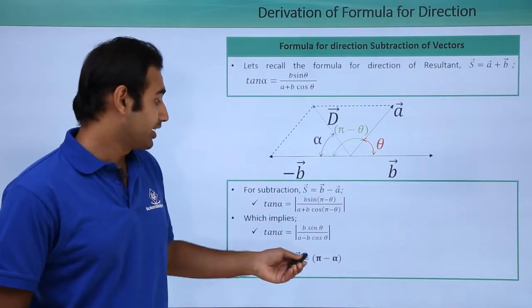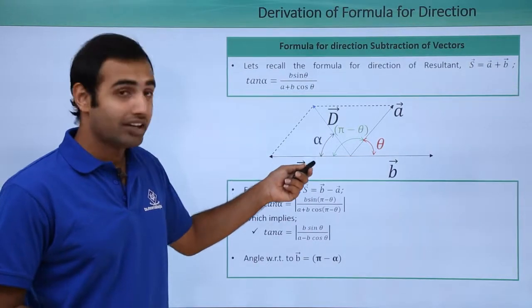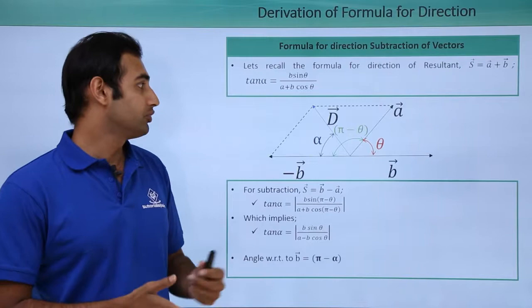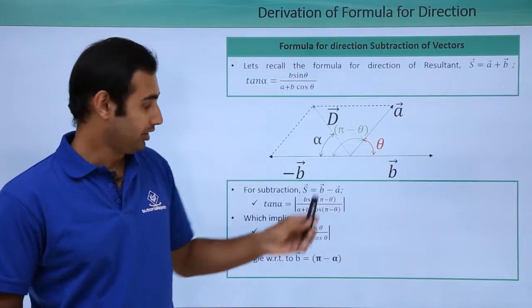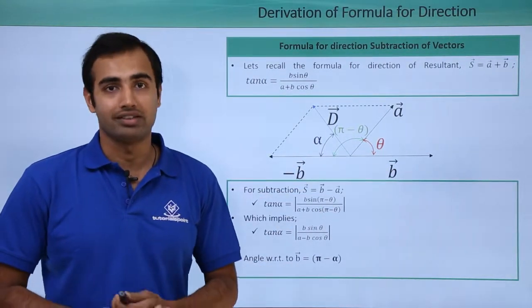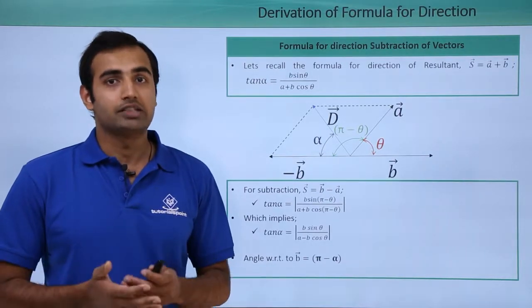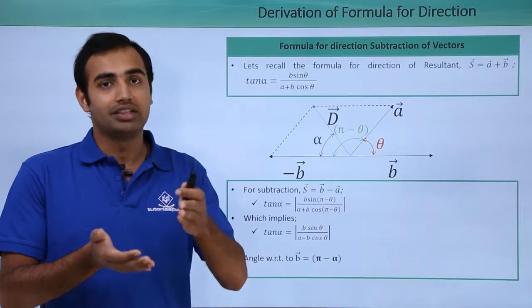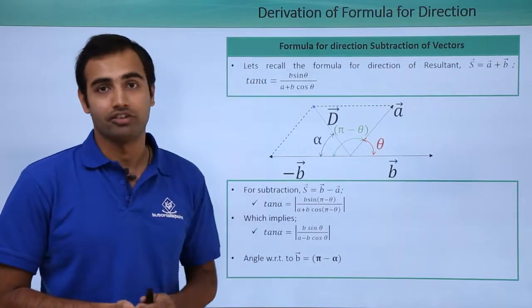Now once again this angle α is with respect to minus b vector. If in the problem they ask you find the angle with respect to b vector, the angle will simply be π - α as the answer. I expect students to use the right sign convention in the problem after essentially solving it, finding the value of α.